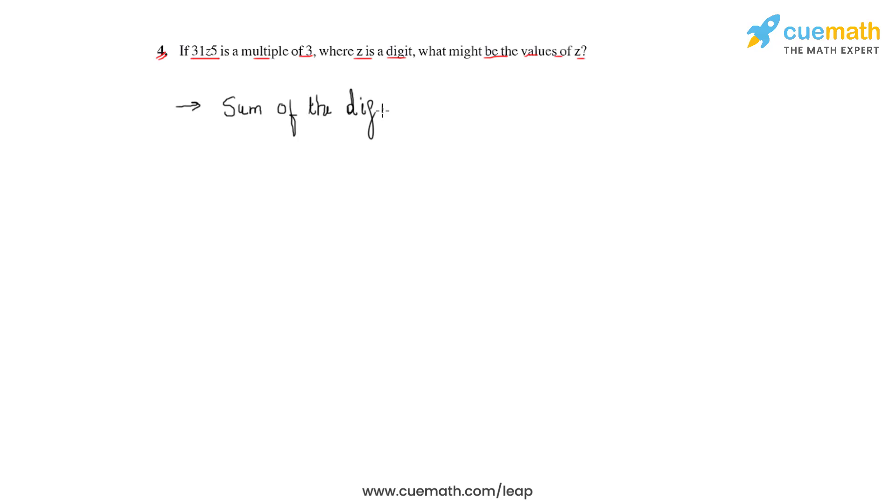So if we consider the sum of the digits of the given number, let us see what we're going to get. Basically, we'll have 3 plus 1 plus z plus 5, and if we consider the sum, we'll be getting 9 plus z.